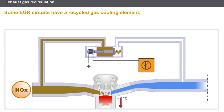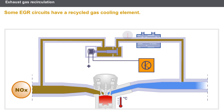Some EGR circuits have a recycled gas cooling element. The recycled gas is passed through an exchanger cooled by the engine cooling circuit. The reduction in the temperature of the recycled gases has the benefit of reducing the quantity of nitrogen oxide.